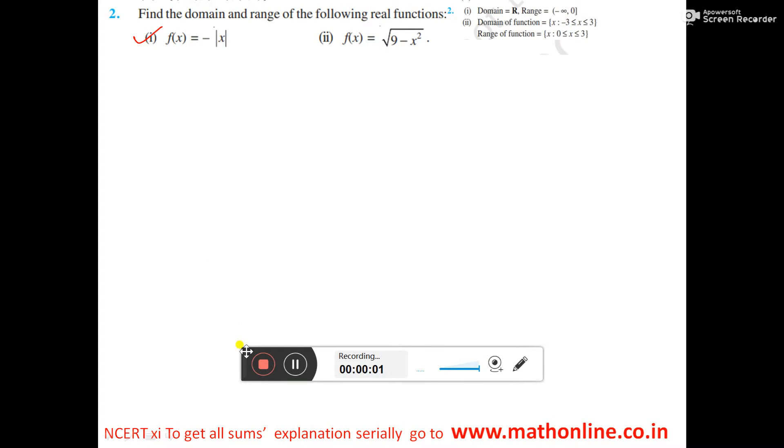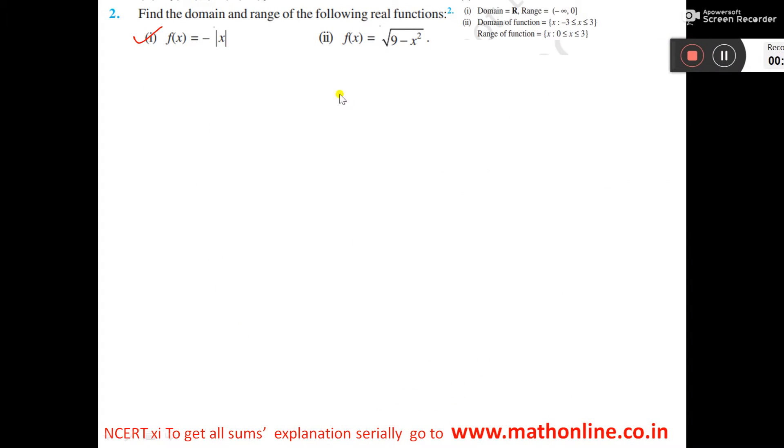I am doing part 2.1 now. You will listen carefully to understand this. The definition of |x| is equal to x if x > 0, equal to 0 if x = 0, and equal to -x if x < 0.